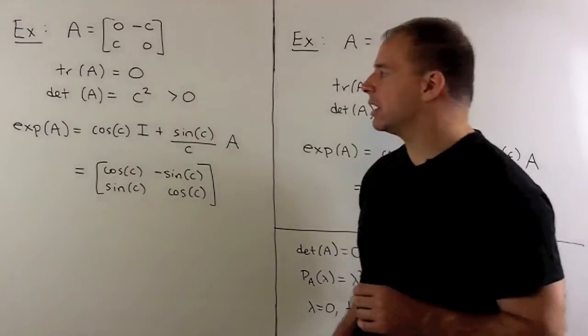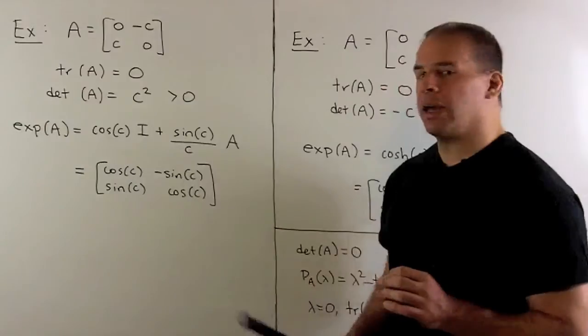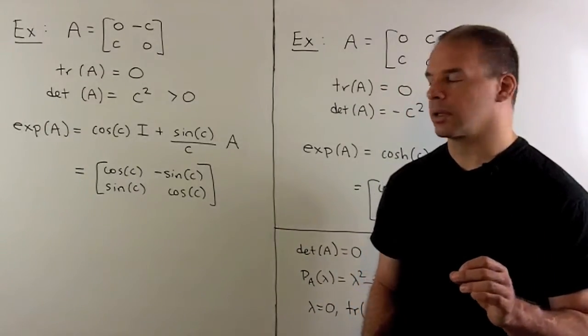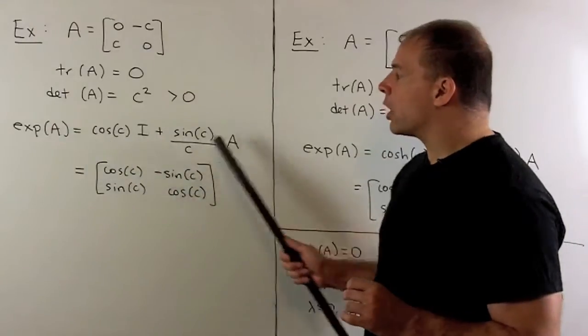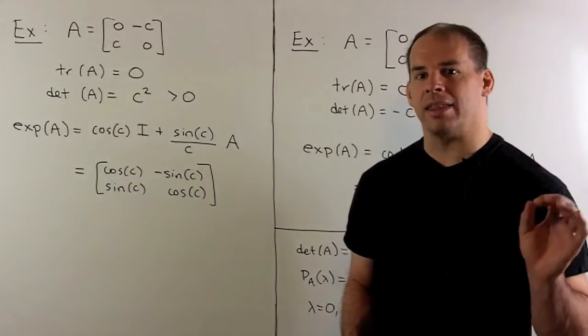Our formula states, exponential of A equals cosine of C times I plus sine of C over C times A. Note, this works with C positive or negative by the evenness of cosine and the oddness of sine.